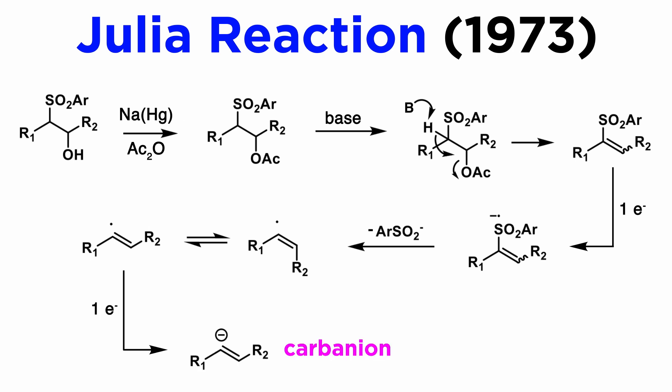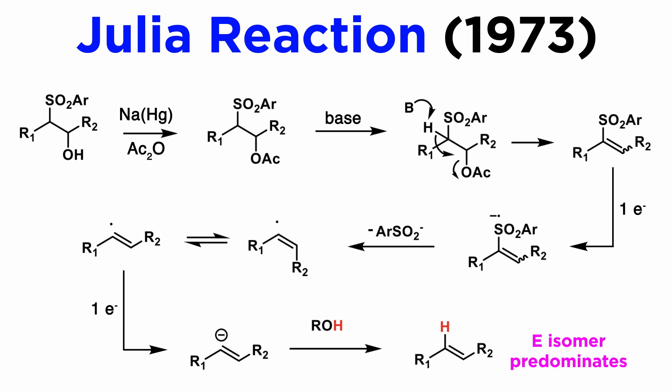The second one-electron reduction gives a carbanion, which is then protonated by the alcohol solvent to yield a mixture of olefins in which the E isomer usually predominates. We will not discuss the rationale for the E selectivity because the Julia reaction is hardly ever run this way anymore.